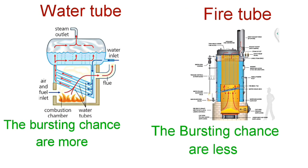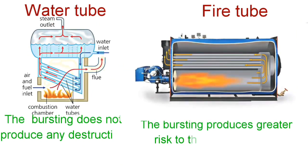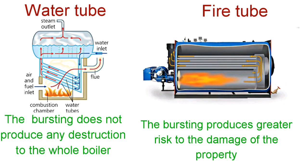The bursting chances of a water tube boiler are more, whereas the bursting chances of a fire tube boiler are less. However, in case of a water tube boiler, bursting does not produce any destruction to the whole boiler, whereas in case of a fire tube boiler, bursting produces a greater risk of damage to the property.